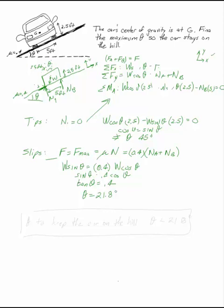Now, what is the question? Theta, to keep the car on the hill, has to be less than 21.8, because as soon as it gets to that point, the car slips off the hill.